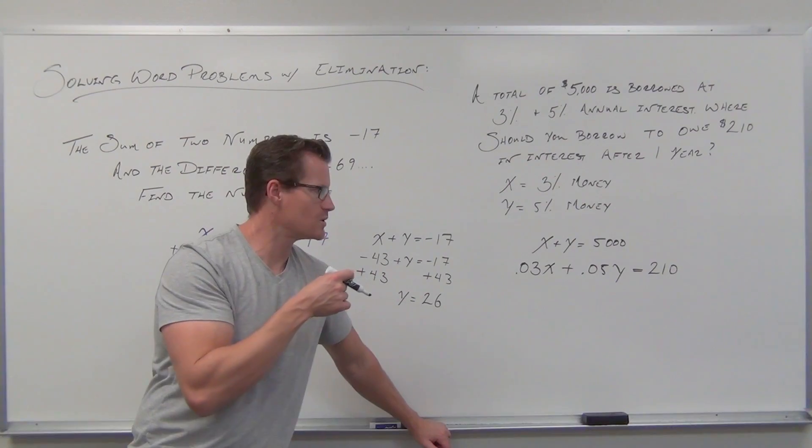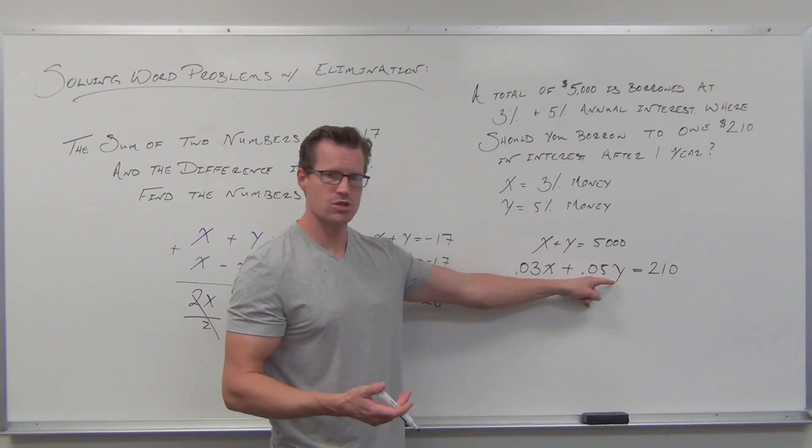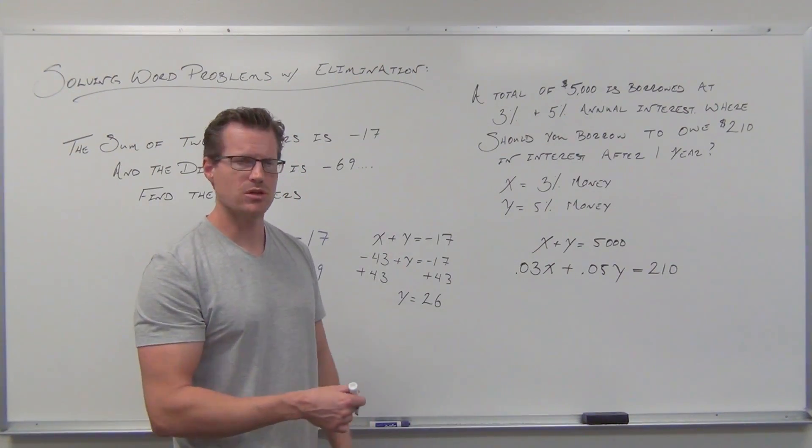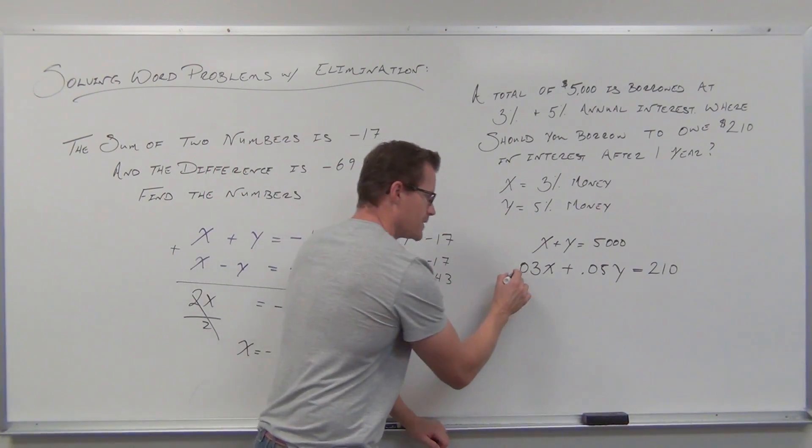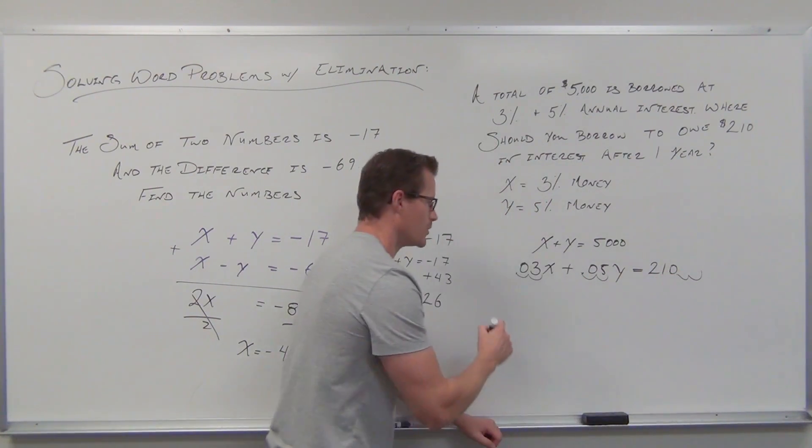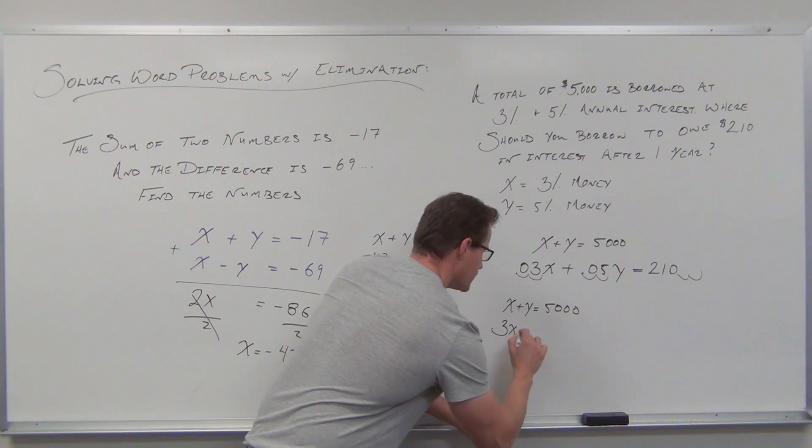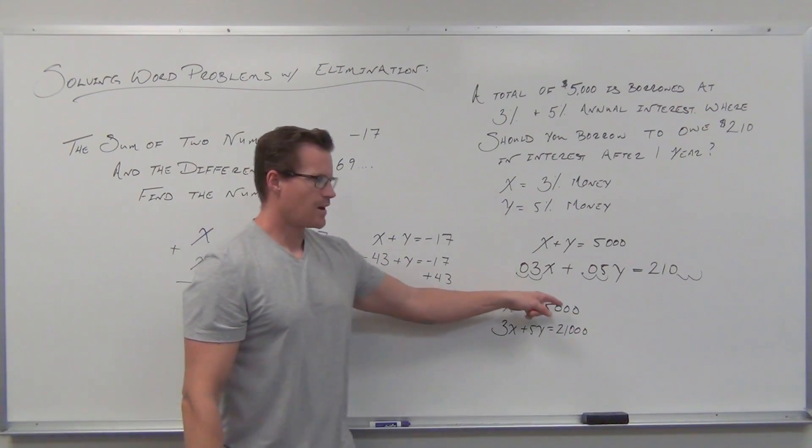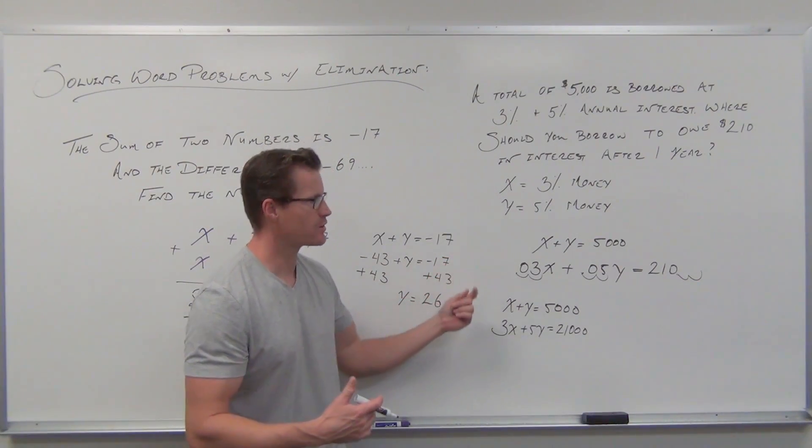Is it better suited to substitution or elimination? You could do either. You could subtract x and do substitution, or eliminate variables. For elimination method, which I'm going to show you, it's set up better with all variables on one side and lined up. Our decimals don't look great, so I'm going to move the decimal on all numbers. So 3x + 5y = 21,000.